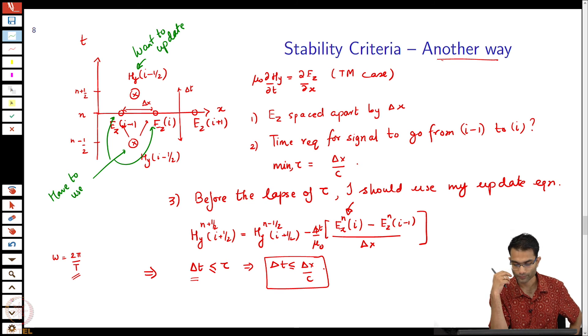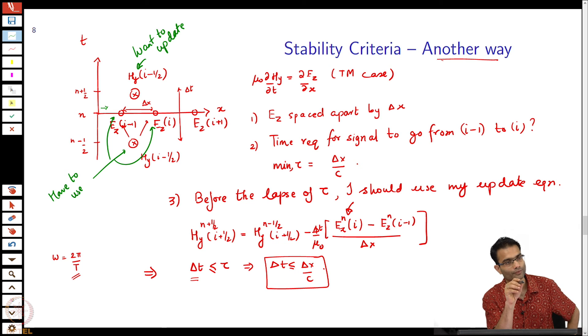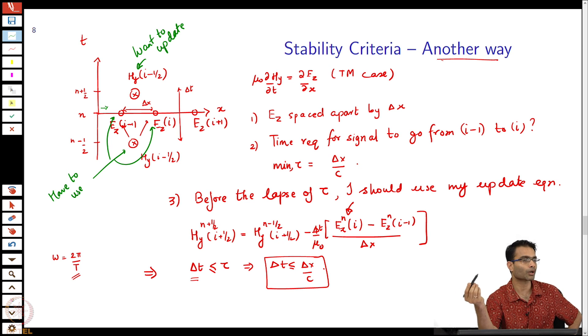If I wait for a time greater than delta x by c, then the wave has, in one case travelling from left to right, already travelled from Ez i minus 1 to Ez i. It has physically travelled, but since I have not yet done a time update, my variables still contain the old value in the location of Ez i. When I go to use the equation I am using an older outdated version of Ez i. In order to prevent that I should quickly do the update before the wave actually reaches there, so when I use the equation I am using the actual value that I know, my best estimate. This says delta t should be less than tau.